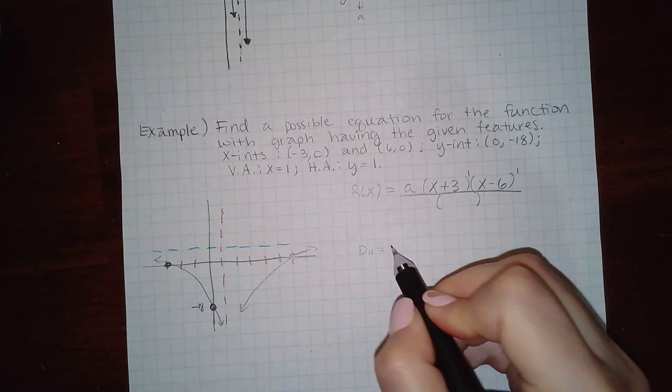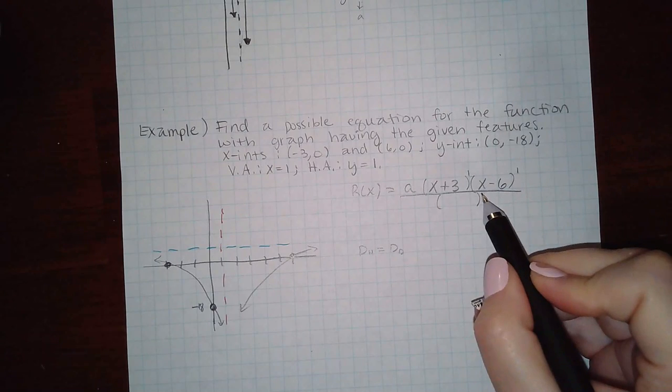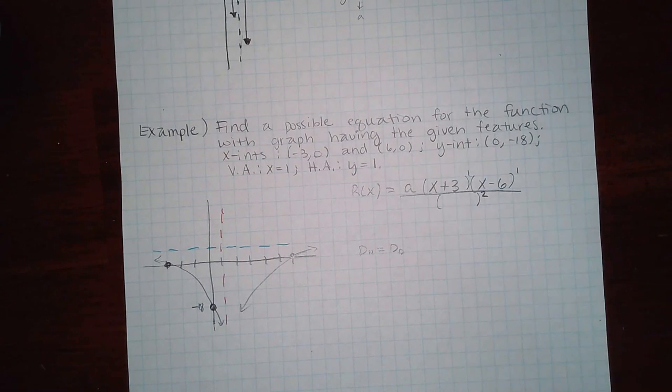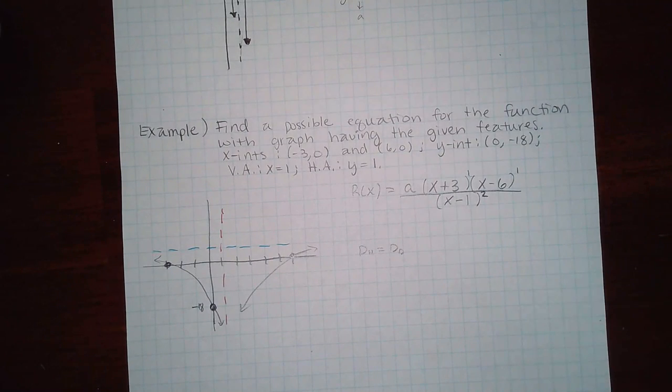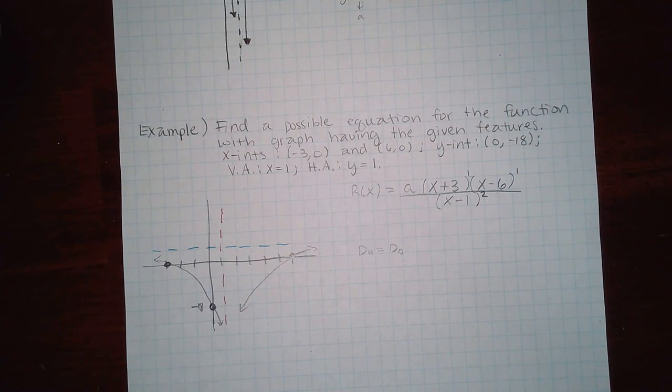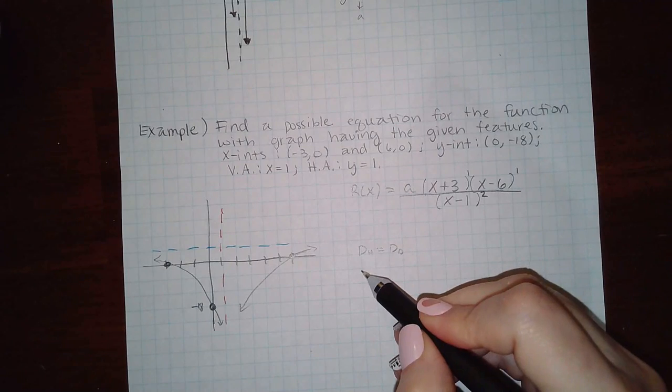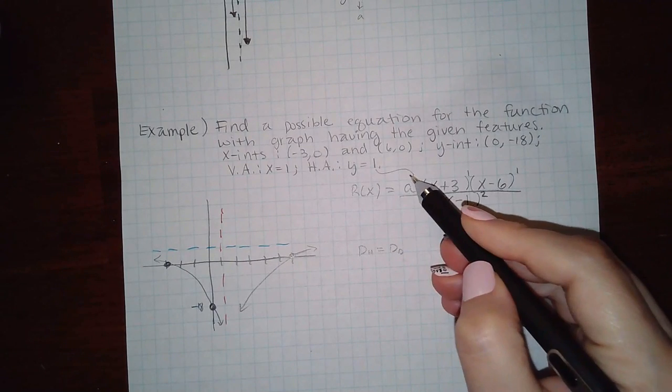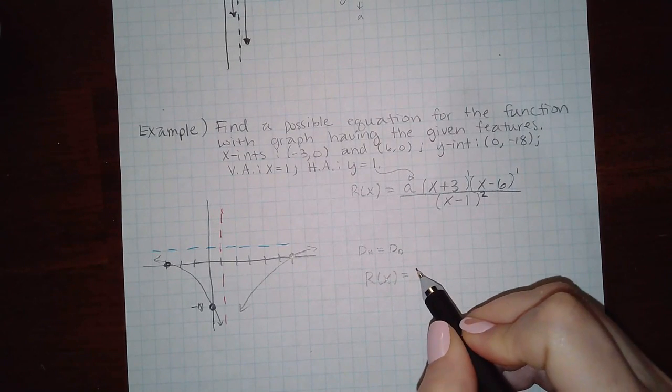Here it says I have a horizontal asymptote of one. Again, if it's not zero that means that the degree of the numerator had to equal the degree of the denominator. Since I've got two up there it means I'm going to have to have two down here, and it's at one so inside the parentheses should be x minus one. I do know what this value should be, it should be a one because the horizontal asymptote is one.